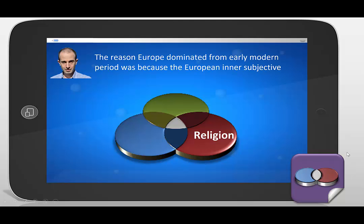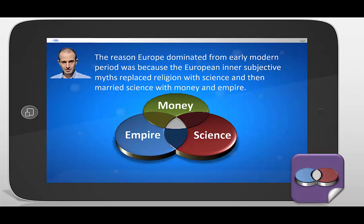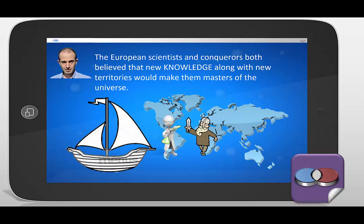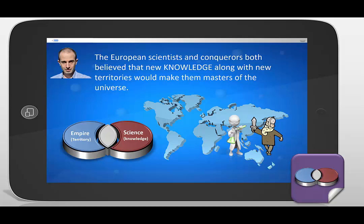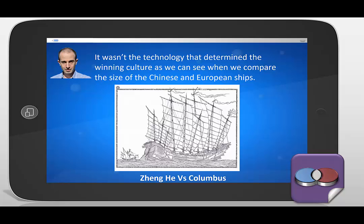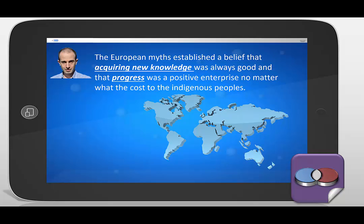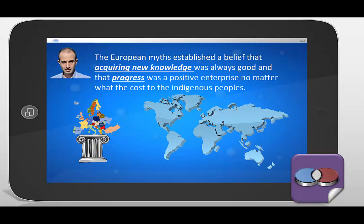The reason Europe dominated from the early modern period was because European inner subjectivity myths replaced religion with science, and then married science with money and empire. European scientists and conquerors both believed that new knowledge, along with new territories, would make them masters of the universe. It wasn't technology that determined the winning culture — as we can see when we compare the size of Chinese and European ships, Columbus's small ship compared to a Chinese ship at the very same time. Technology wasn't the deciding factor.